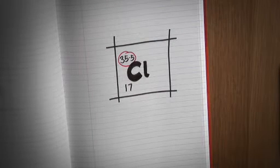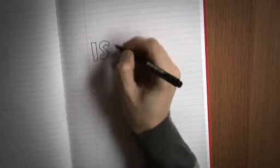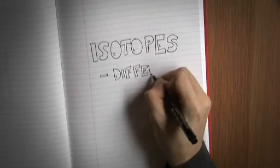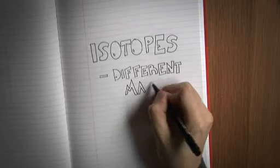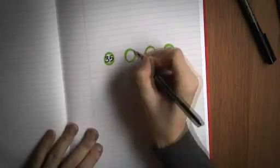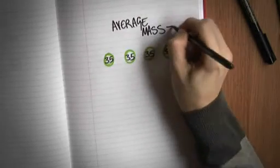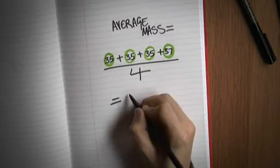How can something have a mass that's 35.5? Well the thing is there are several different forms of chlorine called different isotopes and each one has a different number of neutrons and so it has a different mass. Most chlorine is chlorine 35 so it has a mass of 35, but about a quarter is chlorine 37 so the average mass of all the chlorine will be 35.5.